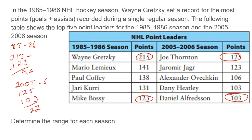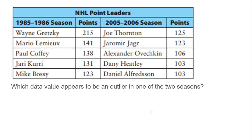So the scoring was way closer in 2005 than it was in 1985 because Gretzky's a weirdo — he's special. Which data appears to be an outlier in the two seasons? In the two seasons, this one is way higher than the rest. Not even close how much higher Wayne Gretzky was than everybody else around him. So that's the outlier.